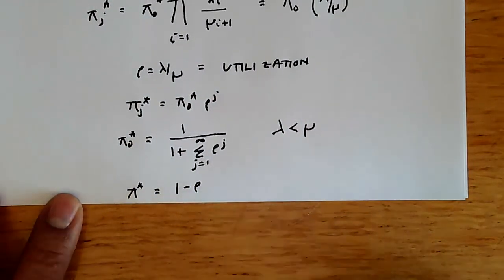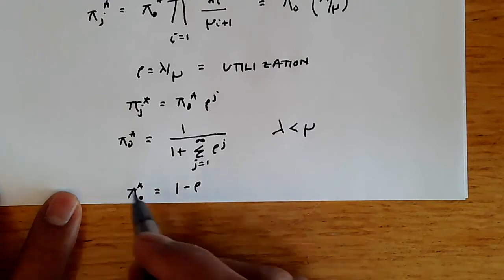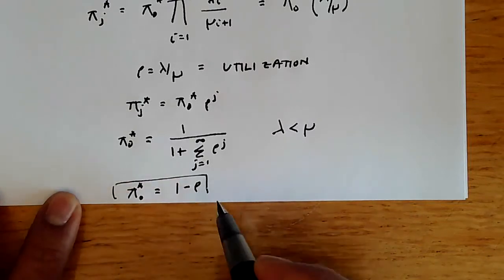In other words, if the utilization is 90%, then 10% of the time we're going to be in state zero, that means we're idle. This has a very simple and intuitive meaning.